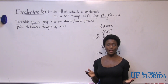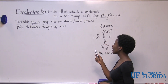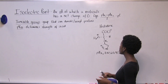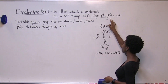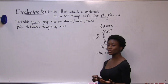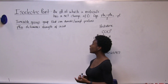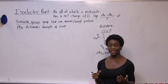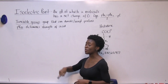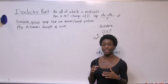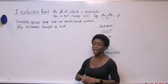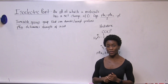So what is the isoelectric point? This is going to be the pH at which a molecule has a net charge of zero, and our equation is going to be pKa1 plus pKa2 divided by two. Next we have ionizable groups — these are groups that can donate or accept protons. And pKa values are going to tell us the strength of an acid, and every ionizable group is going to have a corresponding pKa value.